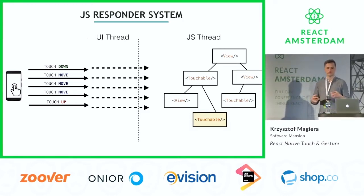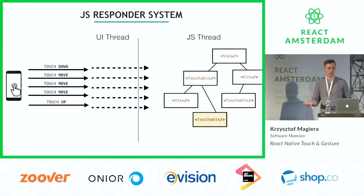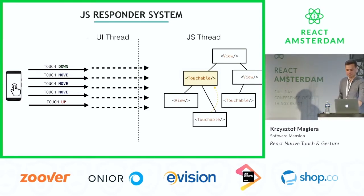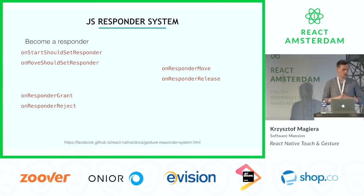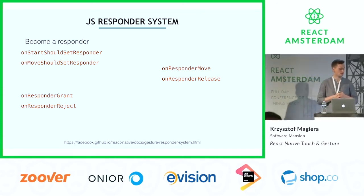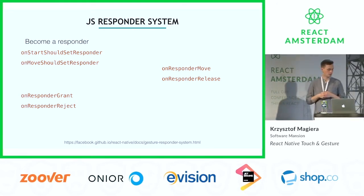The responder system allows components to negotiate which one should be responsible for handling a touch — they can steal the responder lock. A common pattern is that a parent component may want to take over the touch stream it previously passed down. This is a frequent case where the parent can steal your touch stream. The API is pretty simple — virtually any component can implement it by implementing a few handlers.